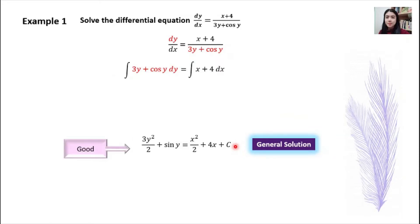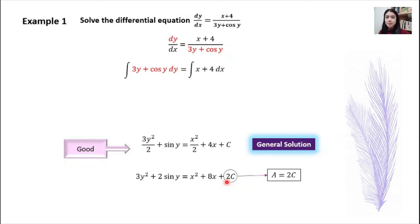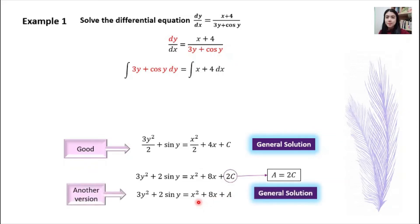Usually we can leave the answer in this form. But some people prefer to improve the general solution by multiplying both sides by 2. If you multiply both sides by 2, you get 2c on the right-hand side. Since c is a constant multiplied by 2, the result is still a constant, which we can call a. This gives another version of the general solution for this example.